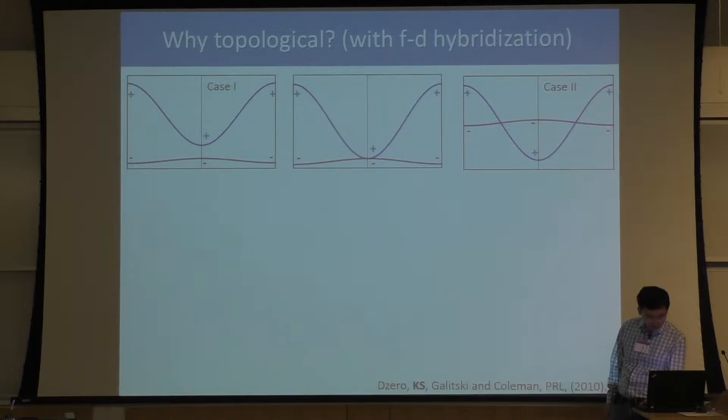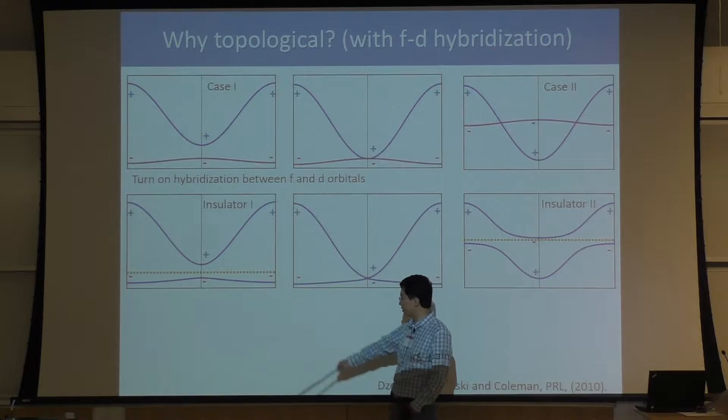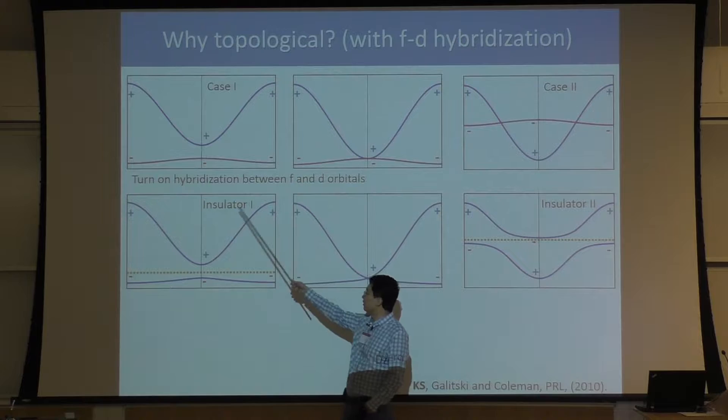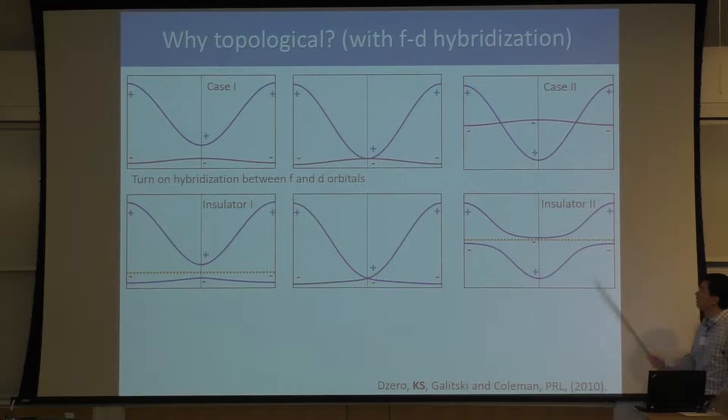Now let's turn on interaction and hybridization between the two bands. For the first case, hybridization will modify the band structure slightly. If we still have a gap, we can put our Fermi energy inside the gap and get an insulator — I call this insulator 1. For the second case, before hybridization there is no gap, but once we introduce hybridization, it opens up a hybridization gap, and we can get another insulator — I call this insulator 2.